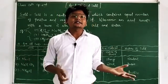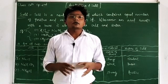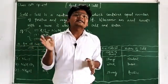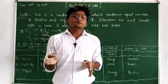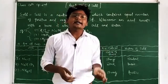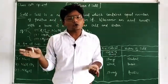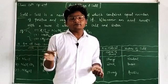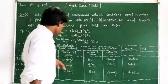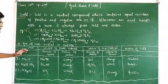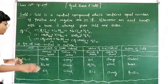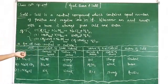But what happens when a strong acid reacts with a weak base? It will give an acidic salt. Similarly, if a weak acid reacts with a strong base, it will give a basic salt. Here are some examples with which you can understand how these salts are formed.